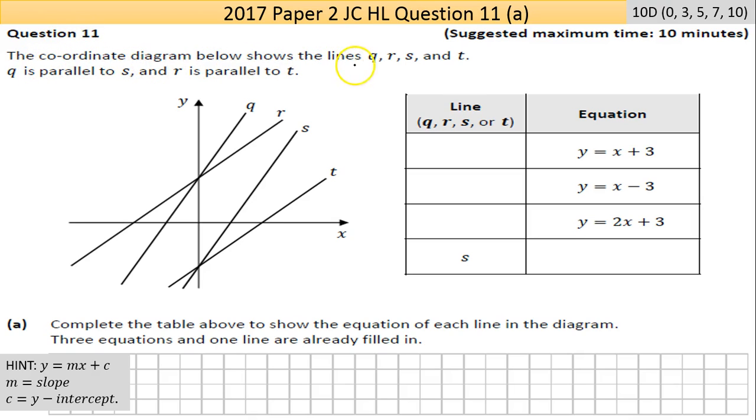Question 11: The coordinate diagram below shows the lines q, r, s, and t. There's no gradient given, you're not given any x or y values. So it's a matter of figuring out the lines from just their shapes. You're told that q is parallel to s, and r is parallel to t. You're asked to identify from the equations for the first three what their lettering is, and then for the last one to write down what the equation of the line is.